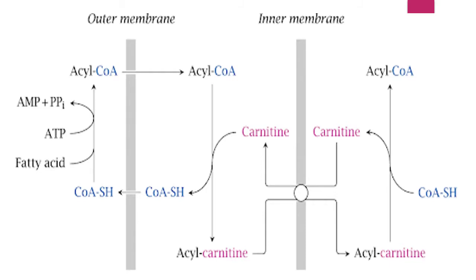This is the pathway of transport of fatty acyl-CoA from the cytosol into the mitochondria. In the first step, acyl group of acyl-CoA is transferred to carnitine, catalyzed by carnitine acyl-transferase I enzyme present on the outer surface of the inner mitochondrial membrane. Then acyl-carnitine is transported across the membrane to the mitochondrial matrix by a specific carrier protein. Carnitine acyl-transferase II, found on the inner surface of the inner mitochondrial membrane, converts acyl-carnitine to acyl-CoA, and the carnitine released returns to the cytosol for reuse.